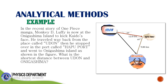Another example is this word problem. Spoiler alert! In the recent story of One Piece manga, Monkey D. Luffy is now at the Onigashima island to kick Kaido. He traveled from a place called Udon, stopped over at a port called Hapu port, and then went to Onigashima. The question is: what is the shortest distance between Udon and Onigashima? You can use vector addition using analytical methods to solve for this shortest distance.